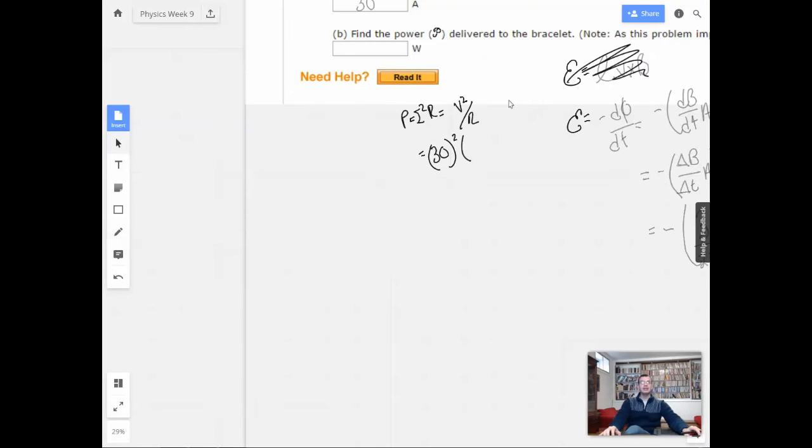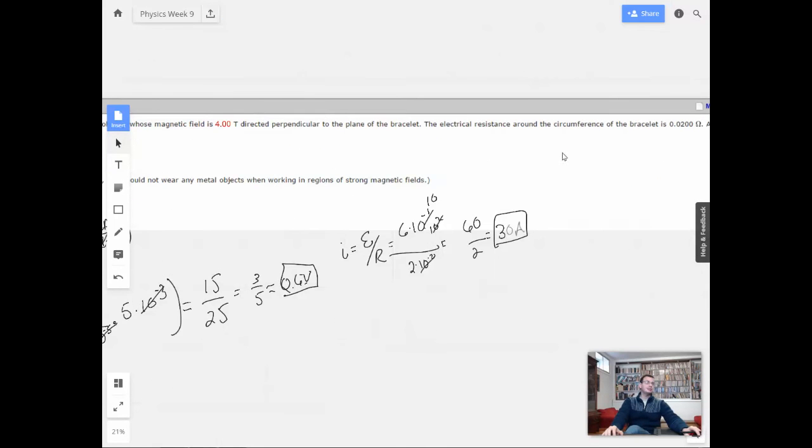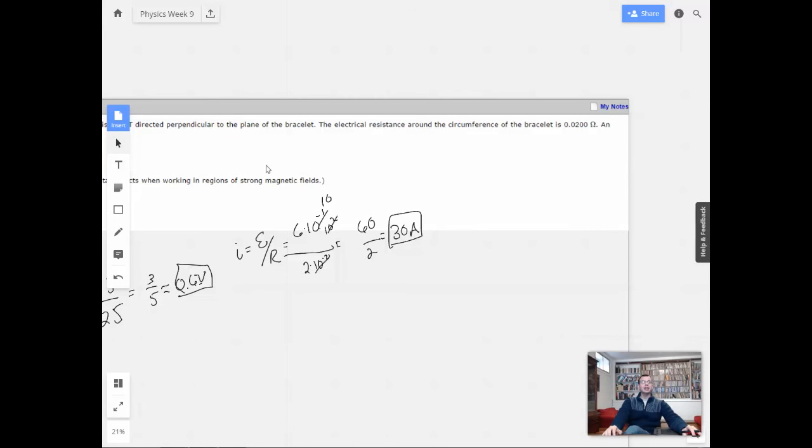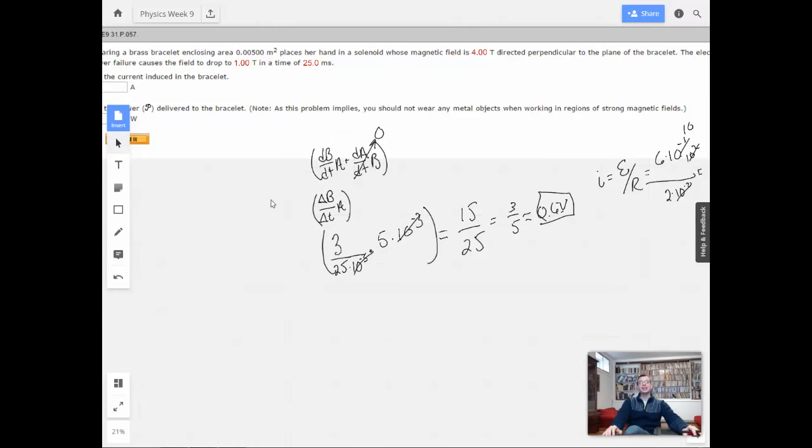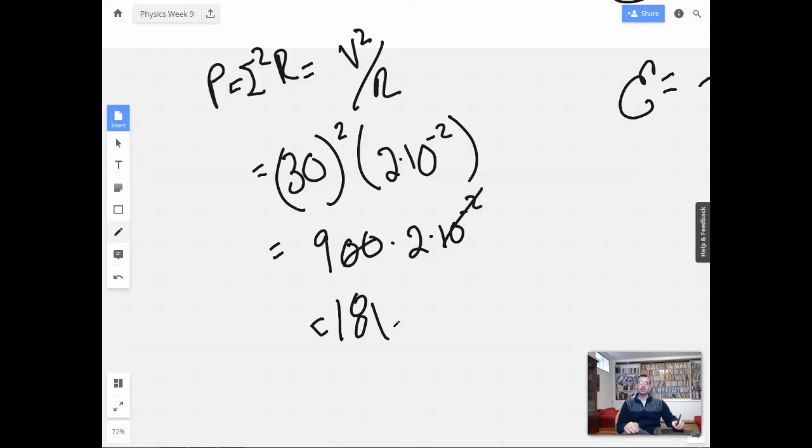So, if I was a smarter person, I would know the details of when and when you can't use it. I don't know. I am not. So, 2 times 10 to the negative second ohms. Times 2 times 10 to the negative second ohms. So, we have 900 times 2 times 10 to the negative second. Cancel equals 18 watts. Bam.